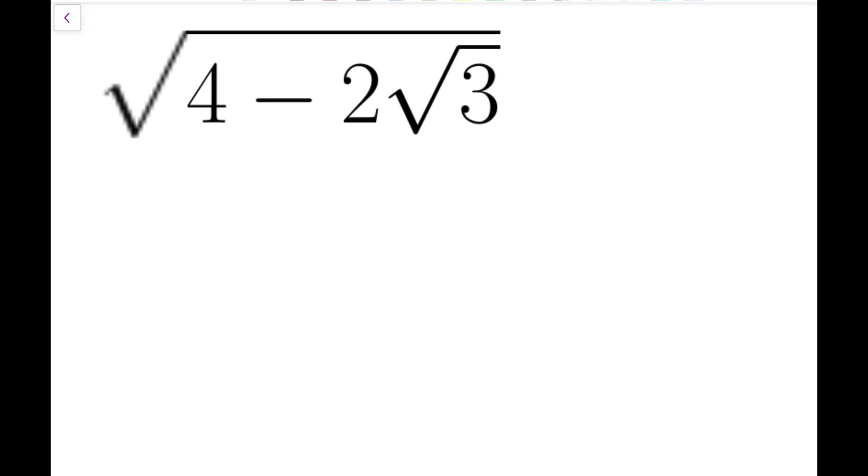It could be a bit hard if you haven't seen the trick before, so let's try to rephrase this problem to make it look less ugly. It will be rephrased as some number, question mark, squared to be equal to 4 minus 2 times the square root of 3, and you have to solve for question mark.